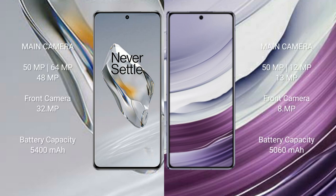OnePlus 12 features a rear triple camera setup: 50 megapixel plus 64 megapixel plus 48 megapixel, with a 32-megapixel front camera. Huawei Mate X5 features a rear triple camera setup: 50 megapixel plus 12 megapixel plus 13 megapixel, with an 8-megapixel front camera.